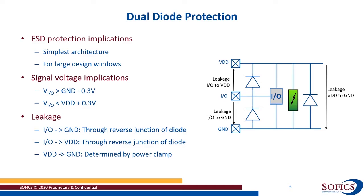Leakage at the IO is extremely low in this case, because both diodes — if the IO is at a voltage somewhere between ground and VDD — are always in reverse. The reverse junction of a diode between IO and ground or IO and VDD will not conduct a large current. Between VDD and ground, it is completely determined by the power clamp.